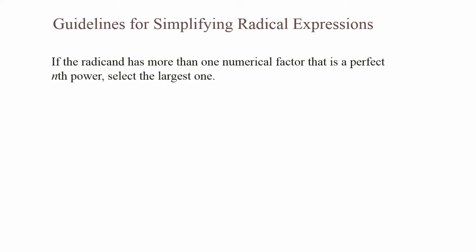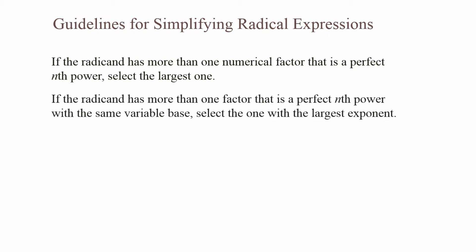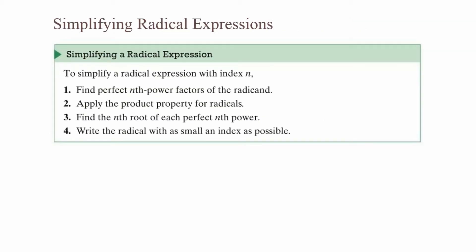Guidelines for simplifying radical expressions: if the radicand has more than one numerical factor that is a perfect nth power, select the largest one. If the radicand has more than one factor that is a perfect nth power with the same variable base, select the one with the largest exponent. To simplify a radical expression with index n: 1. Find perfect nth power factors of the radicand. 2. Apply the product property for radicals. 3. Find the nth root of each perfect nth power. 4. Write the radical with as small an index as possible.